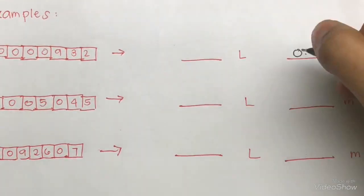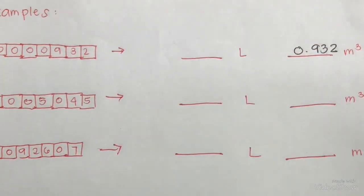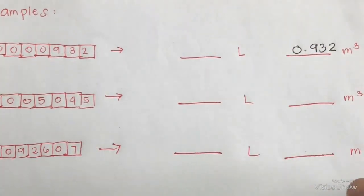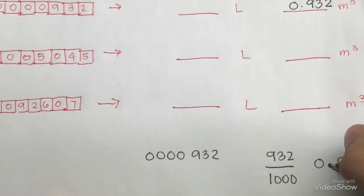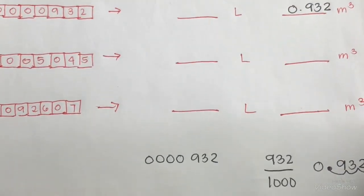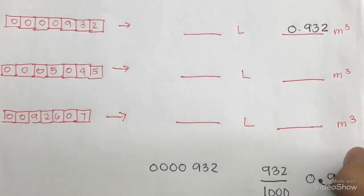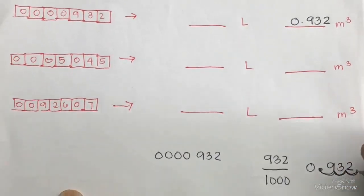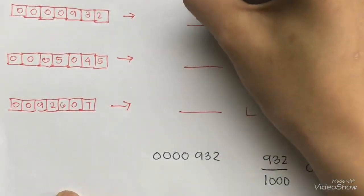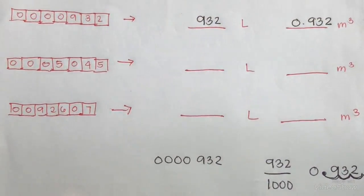To convert to liters, move the decimal point three places back to the right. So the answer is 932 liters.